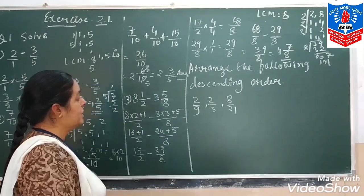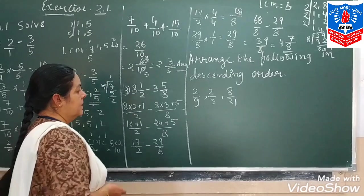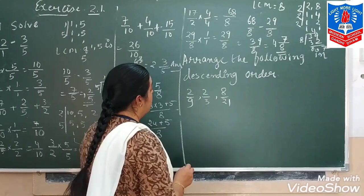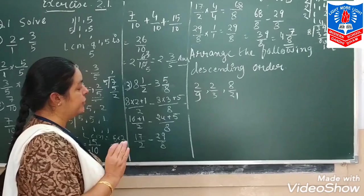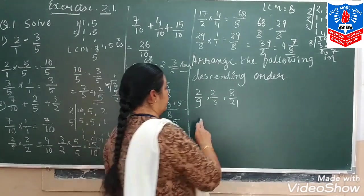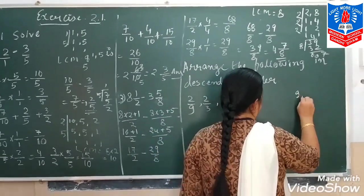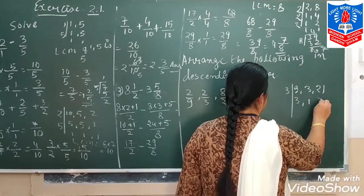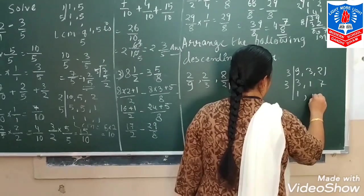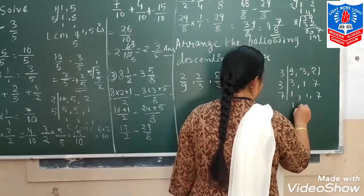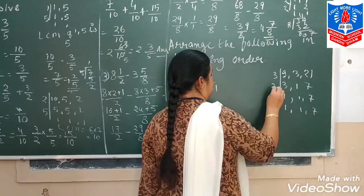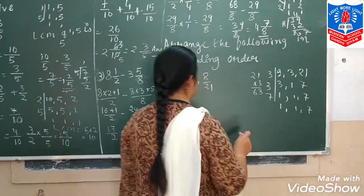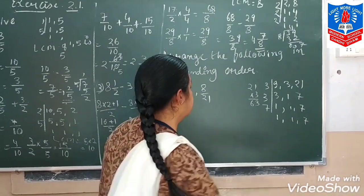Now the second question: arrange the following in descending order. The fractions are 2 by 9, 2 by 3, and 8 upon 21. Both numerators and denominators are different, so first we find LCM of 9, 3, and 21. LCM is equal to 63.